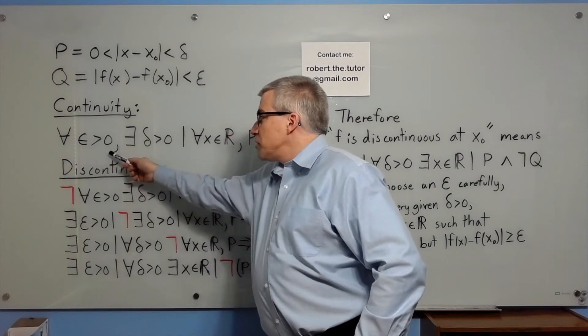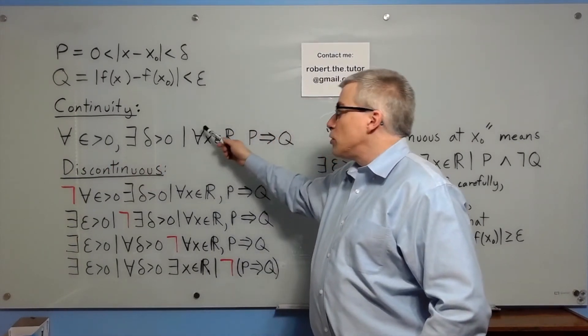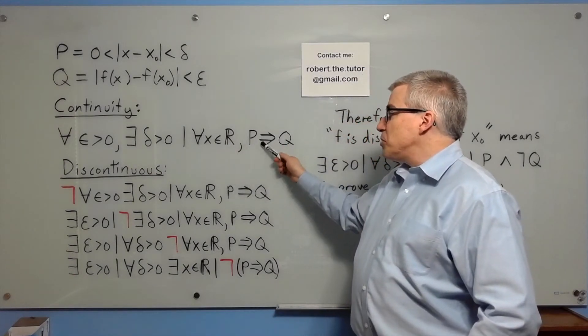For all epsilon greater than zero, there exists a delta greater than zero, such that for all real numbers x, p implies q.